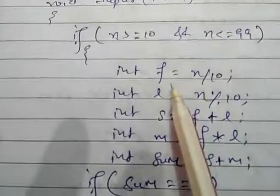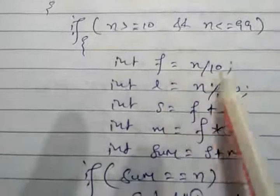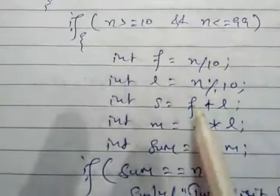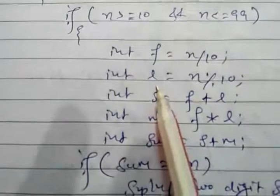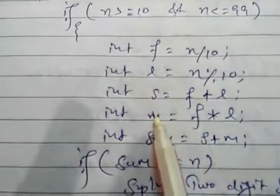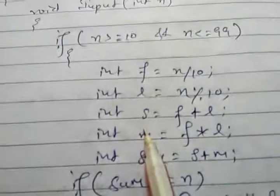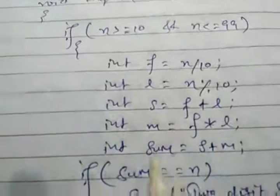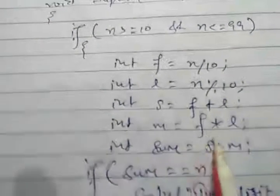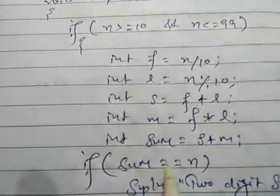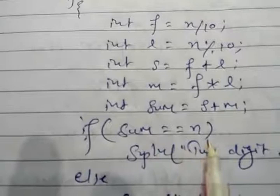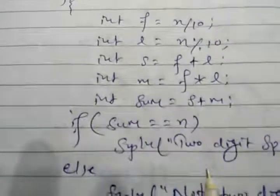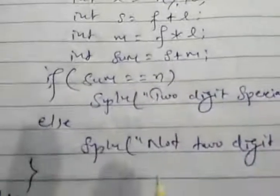Here we are extracting the first digit: n divided by 10 gives the first digit, and n modulus 10 gives the last digit. Now we perform sum = first + last, multiplication = first * last, and finally sum = sum + multiply. If the final sum is equal to n, we print 'two digit special number', otherwise 'not a two digit special number'.